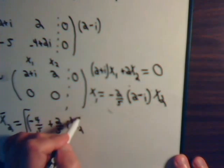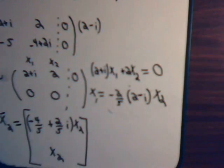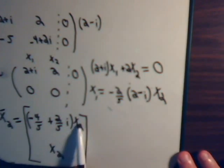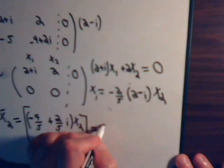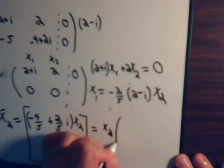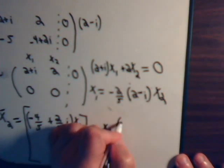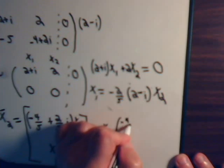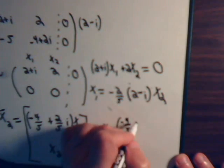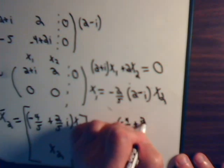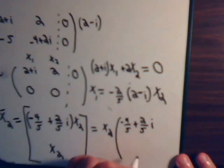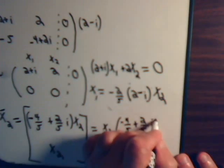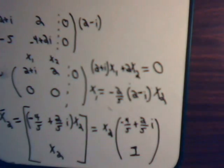So, that is our second eigenvector. We can get a better expression just by factoring this out. This will equal x2 times minus 4 fifths, plus 2 fifths i, 1. So, that's our second eigenvector.